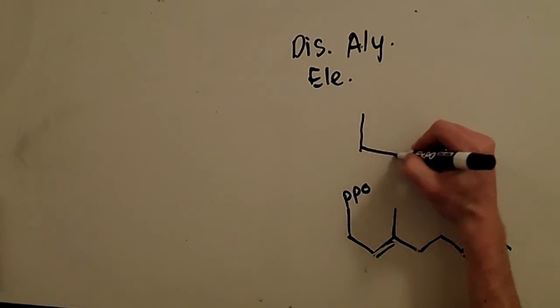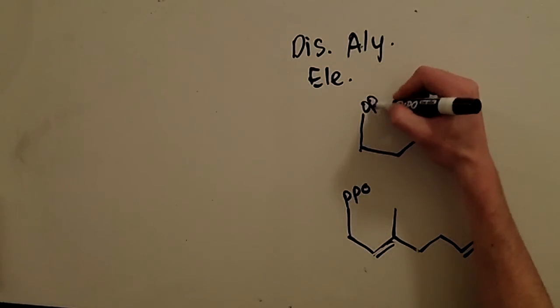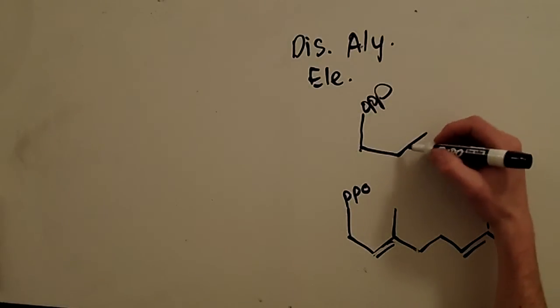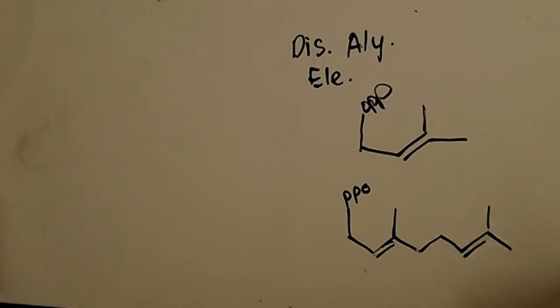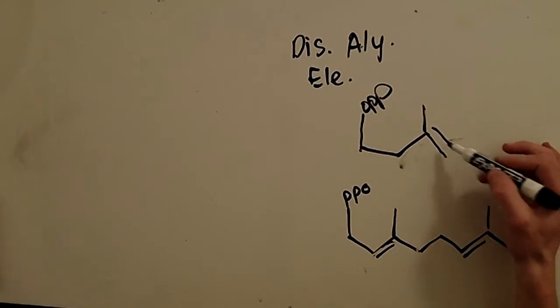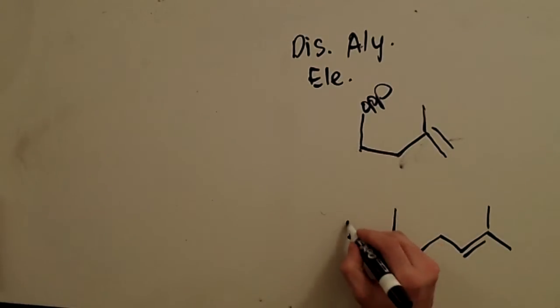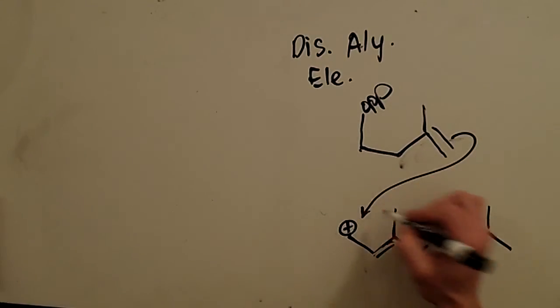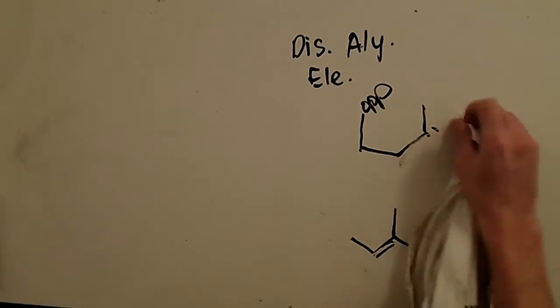So, isopentenyl pyrophosphate was this guy, OPP. And actually that's the dimethylallyl pyrophosphate, so it's really this. And we use this guy because he can attack here. So we dissociate, positive charge, attack, and that's essentially it. That's farnesyl pyrophosphate right there.